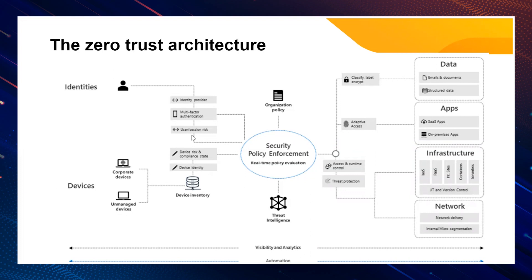On the network side, to reduce your risk you've got to adopt micro-segmentation. Micro-segmentation may seem to go against the identity security principle we've been discussing, but the reality is it may take organizations some time to fully adopt an identity security approach, so micro-segmentation is still required. This is where you make sure there is no undue traffic between departments, functions, geographies, or other logical segments.